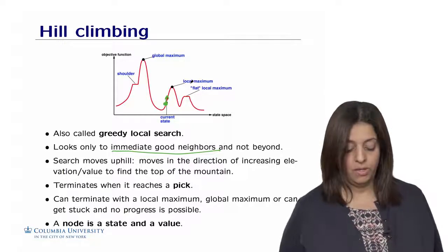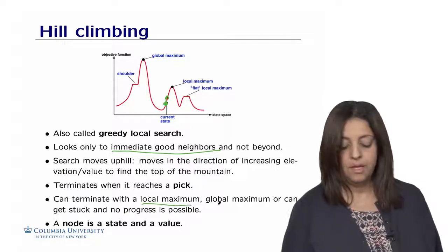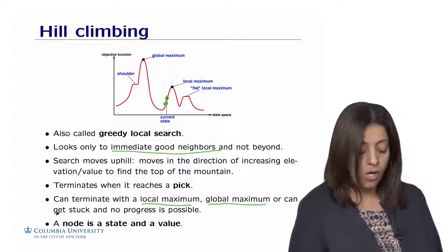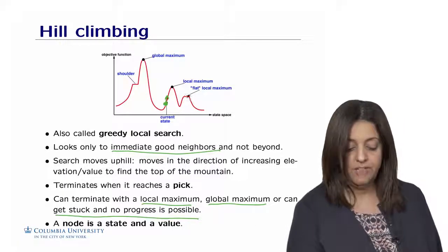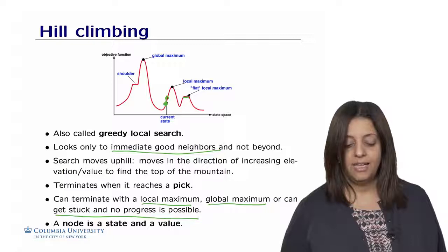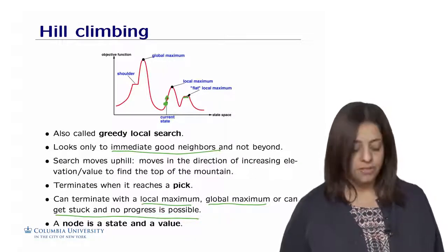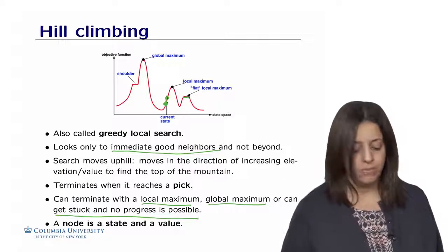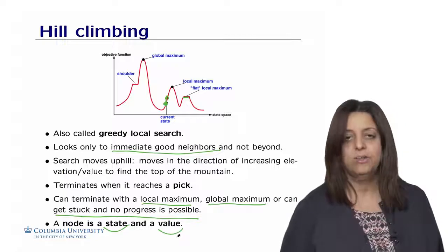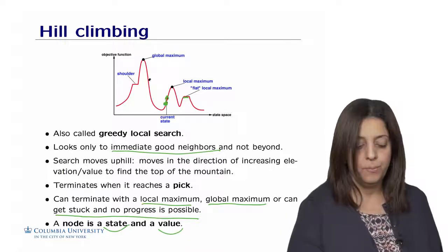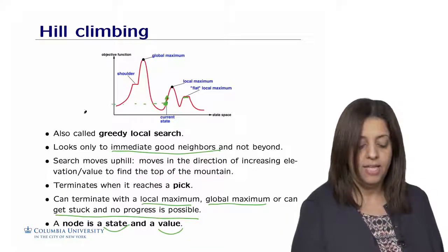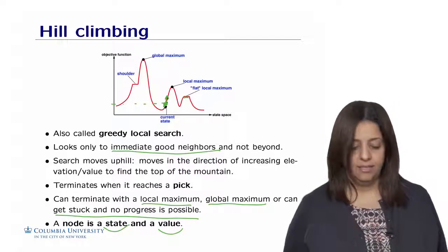It terminates when it reaches a peak, but also can terminate with a local maximum, ideally a global maximum, or can get stuck and no progress is possible if, for example, it's in a flat local maximum. A node in this case is made of two components: a state and a value. The value would be the value of the objective function at the current state here.